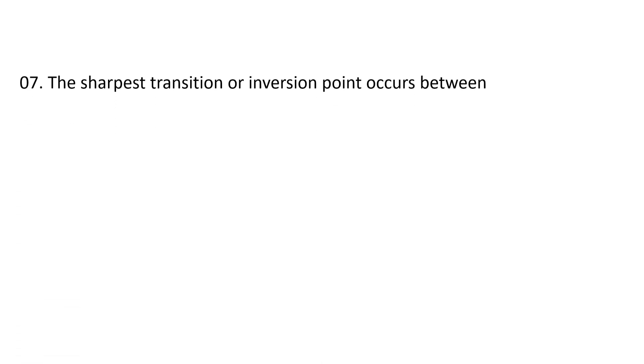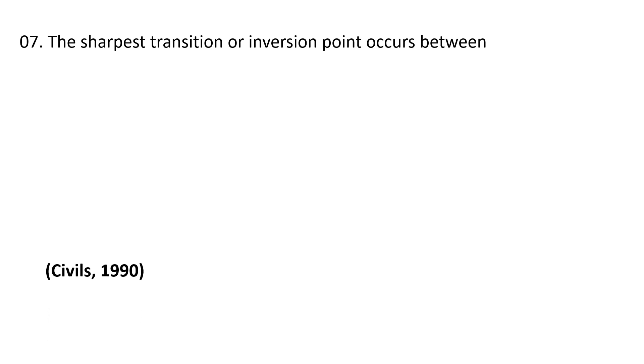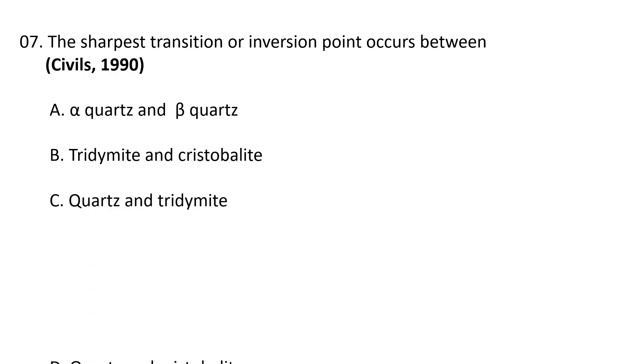Next question. The sharpest transition or inversion point occurs between: A. Alpha quartz and beta quartz, B. Tridymite and cristobalite, C. Quartz and tridymite, D. Quartz and cristobalite. So correct answer is the sharpest transition or inversion point occurs between alpha quartz and beta quartz at 573 degree centigrade. So correct answer is A.